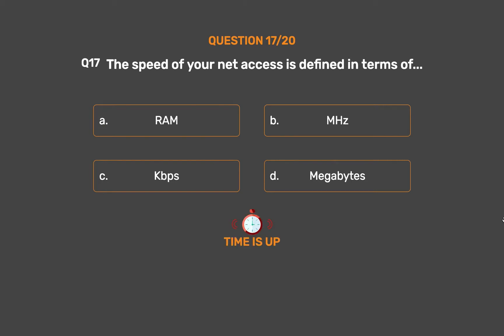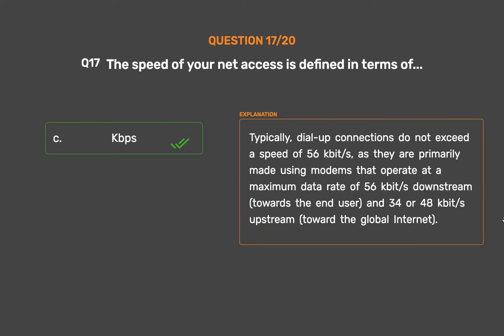The correct answer is Option C: KBPS. Typically, dial-up connections do not exceed a speed of 56 kilobits per second, as they are primarily made using modems that operate at a maximum data rate of 56 kilobits per second downstream toward the end user, and 34 or 48 kilobits per second upstream toward the global internet.